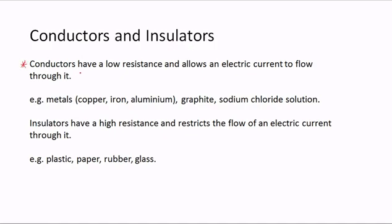Conductors have a low resistance and allow an electric current to flow through them. Examples of conductors are metals, for example copper, iron, aluminium, and graphite, which is an allotrope of carbon, and sodium chloride solution.